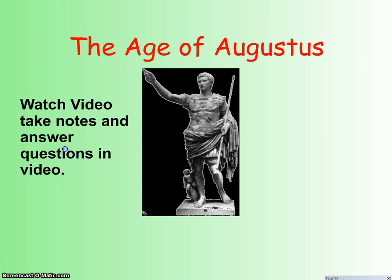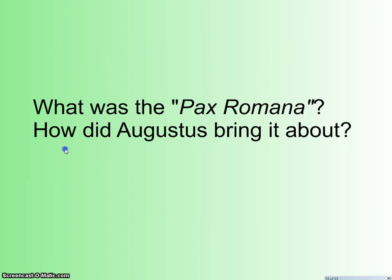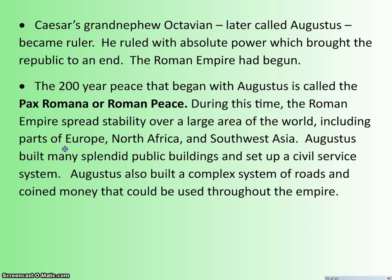That brings us to the Age of Augustus. You'll need to continue watching this video and taking notes — there are some questions embedded in it. Here's a statue of Augustus. He's Caesar's grandnephew; when he comes to power in 44 BCE, he's 18 years old, so by the time he defeats Cleopatra and Antony, he's around 30. You need to explain what the Pax Romana was and how Augustus went about bringing it about. Octavian, later called Augustus, becomes ruler on Caesar's death, and after defeating Antony and Cleopatra, gains absolute power and brings the Republic to an end — the period of the Roman Empire has begun.